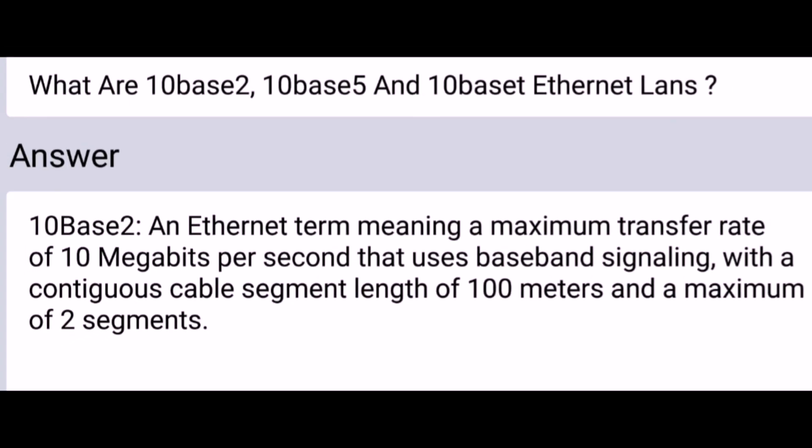What are 10Base2, 10Base5, and 10BaseT Ethernet LANs? 10Base2 is an Ethernet term meaning a maximum transfer rate of 10Mbps that uses baseband signaling with a contiguous cable segment length of 100m and a maximum of 2 segments.